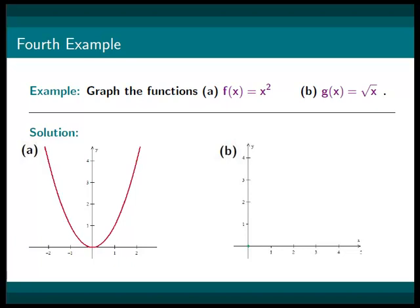For g(x), we will only sub in positive values of x, since we know that the domain only contains positive numbers, because you cannot take a square root of a negative number. We will sub in x as 0 first and get the first point (0, 0).